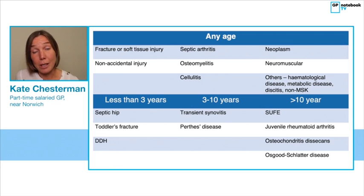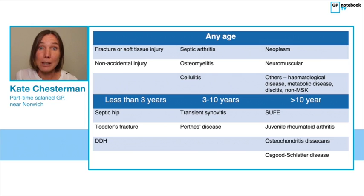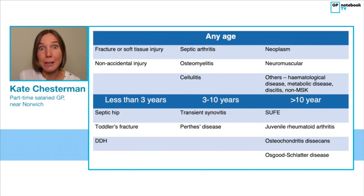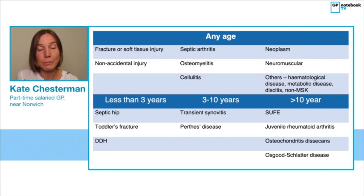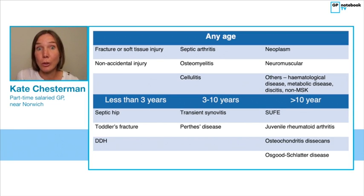There are quite a few conditions that can happen at any age. Trauma and soft tissue injury can happen in infants, children, and young people at any age, and we always need to be aware of the possibility of non-accidental injury, keeping that as a possibility until we're happy it hasn't occurred. Infections can also happen at any age — septic arthritis, osteomyelitis, and cellulitis may all cause children to limp.